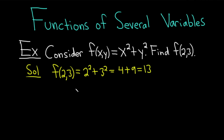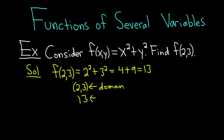In this particular example, the ordered pair 2 comma 3 belongs to the domain of the function — it's an input. And the number 13 belongs to the range of the function — it's an output. Let's do some examples of actually finding domain and range.